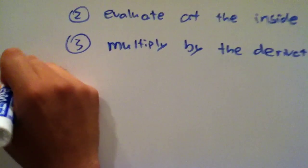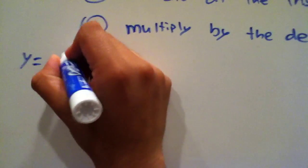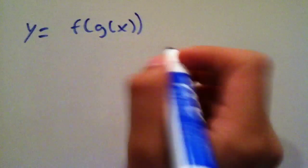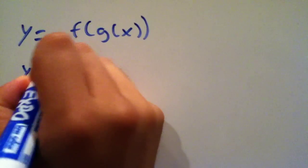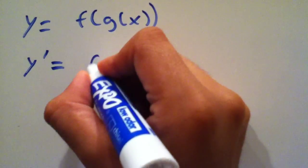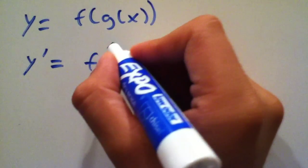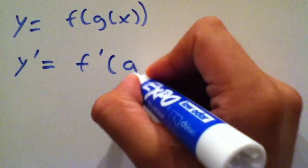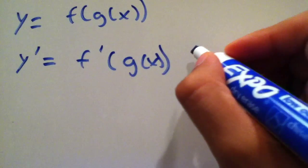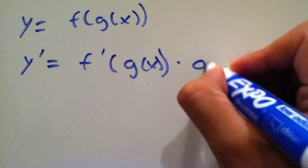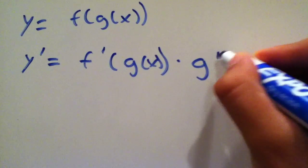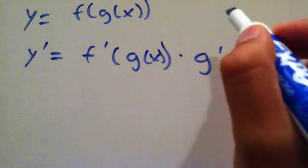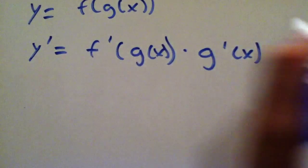For y equal to f of g of x — standard notation — y prime will be the derivative of the outside function, f prime, evaluated at the inside function, g of x, multiplied by the derivative of the inside function, g prime of x.